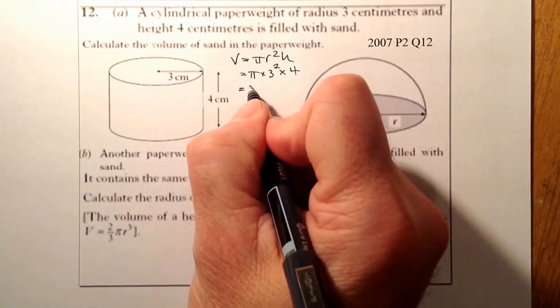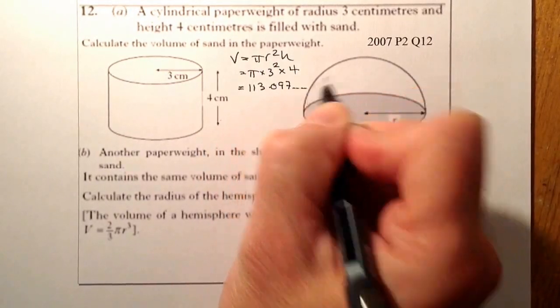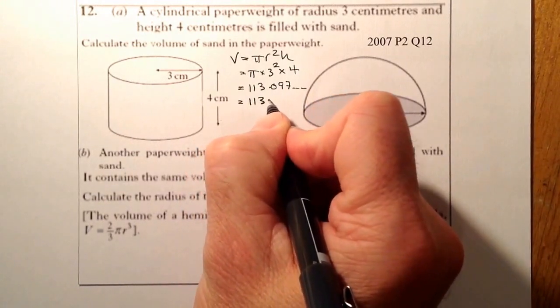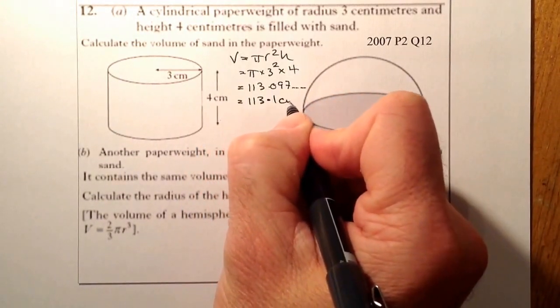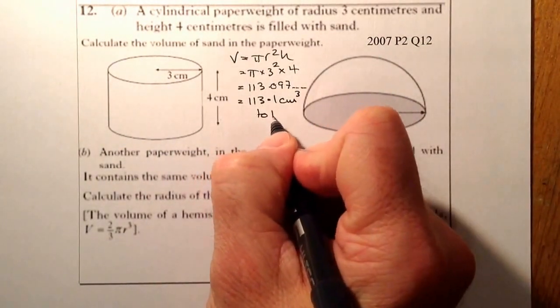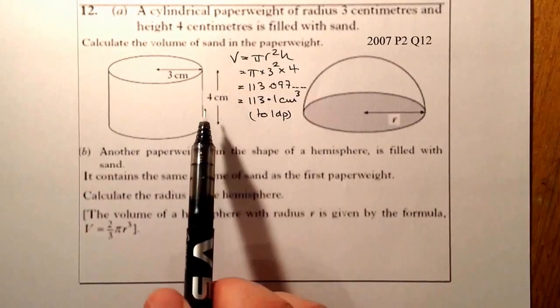Multiply that out in the calculator: 113.097 and some others. If I round that to 1 decimal place, that's going to be 113.1 centimeters cubed to 1 decimal place. That's part A complete.